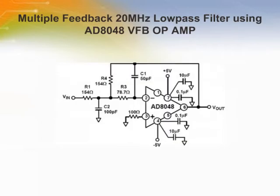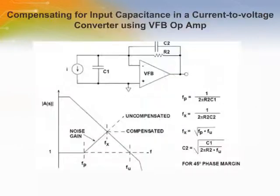VFB op-amps, on the other hand, make very flexible active filters. A multiple-feedback 20 MHz low-pass filter using the AD8048 is shown. Fast op-amps are also useful as current-to-voltage converters in applications such as high-speed photodiode preamplifiers and current output DAC buffers. A typical application using a VFB op-amp as an IV converter is shown.